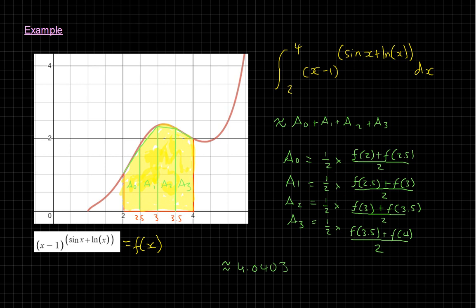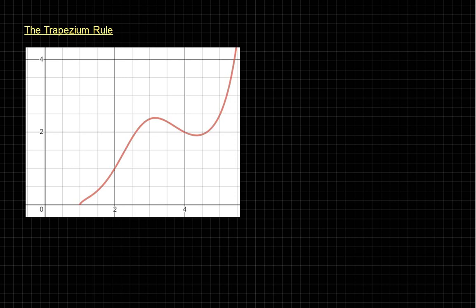That's the method for this specific function. What we want to do now is generalise this rule — come up with a description of how to do this so that it works for any function. The first step is to pick a certain number of strips, let's call it n strips. In the previous example we had four strips; now I'll just say an arbitrary number n. If I pick a larger number of strips, I'll get a more accurate answer.